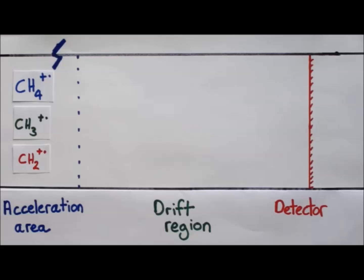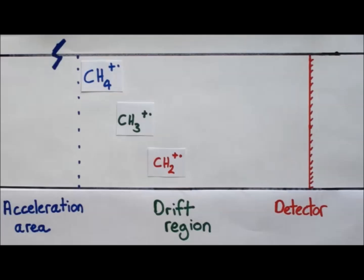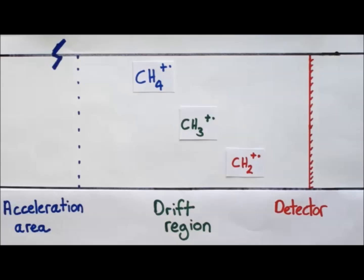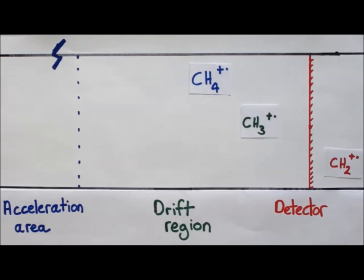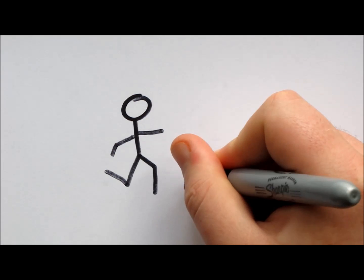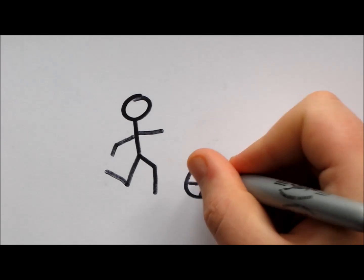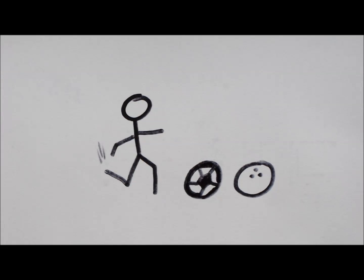The time of flight mass analyzer works by accelerating these ions in an electric field. All ions receive the same amount of potential energy from this electric field, which is converted to kinetic energy. The ions then travel down the flight tube, known as the drift region. The ions separate out because the heavier ions will reach a lower speed than the lighter ones. In the same way if you kicked a football and a bowling ball at the same time with the same amount of force, the football would fly off much quicker.